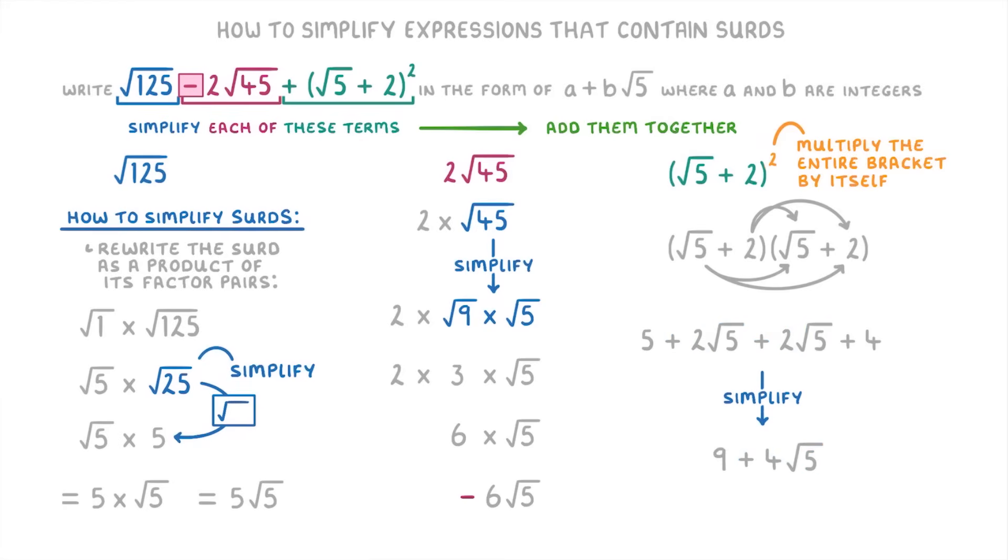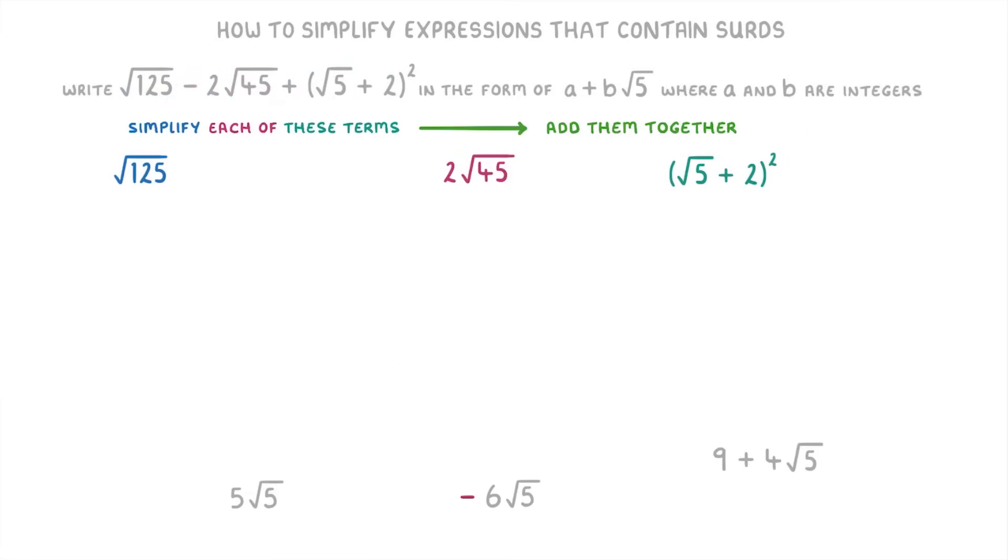And if we simplify this, 5 plus 4 is 9, and 2√5 plus 2√5 is 4√5, so we end up with 9 plus 4√5. So if we now rub out all of our workings, we can see that we've got the simplified form of all three of the terms in the question: 5√5 for the √125 term, minus 6√5 for the minus 2√45 term, and lastly 9 plus 4√5 for the √5 plus 2 all squared term.